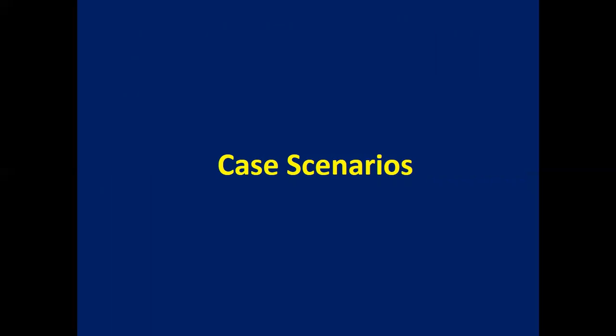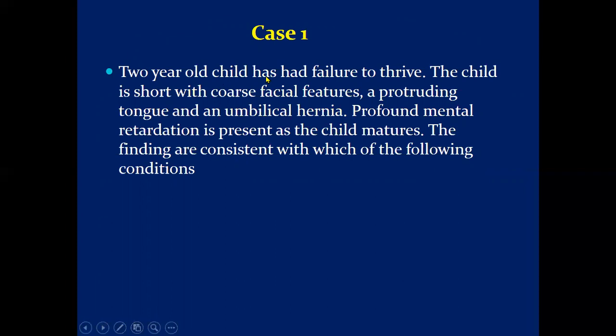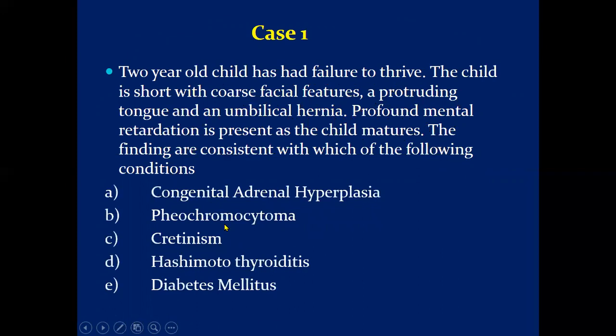Case 1: A 2-year-old child has had failure to thrive. The child is short with coarse facial features, protruding tongue, and an umbilical hernia. Profound mental retardation is present. These clinical findings are consistent with which of the following conditions?